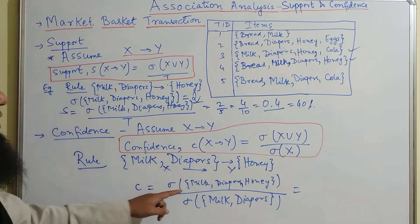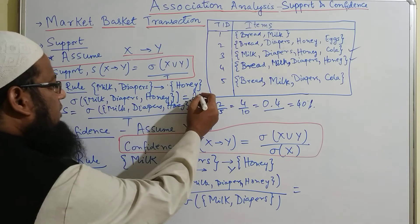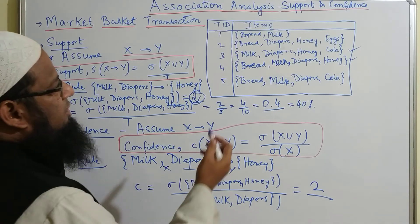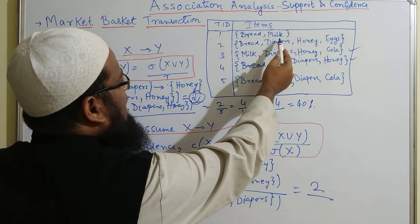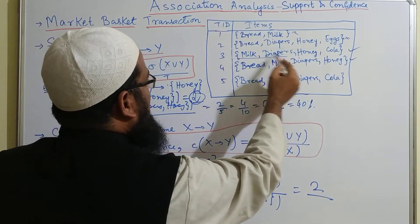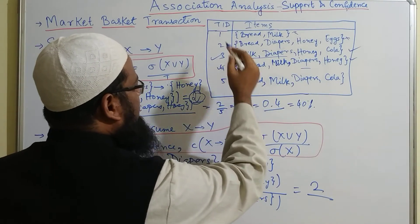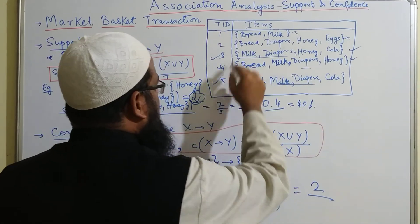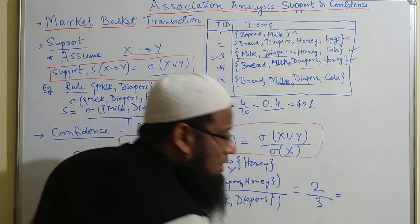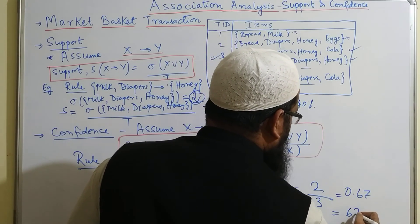We have already found the support count of milk, diaper and honey as 2. Now let us check where we have milk and diaper: milk and diaper is not in transaction 1 or 2, but milk and diaper is in transaction ID 3, in transaction ID 4, and in transaction ID 5. So that is 3 counts. The confidence is 2 by 3, which equals 0.67 — around 67 percent.